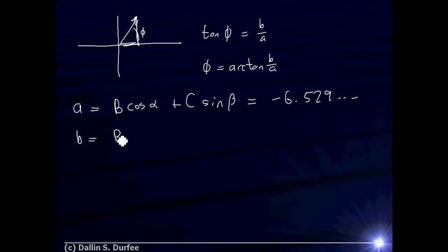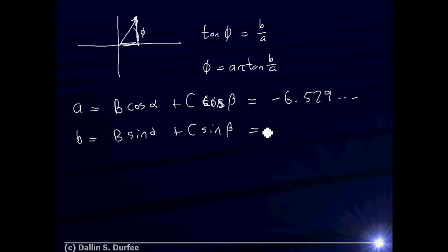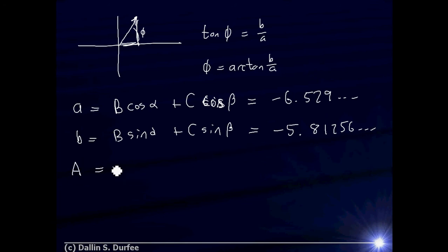The imaginary part is B*sine(alpha) plus C*sine(beta) — cosine gives you the real part of a complex exponential and sine gives you the imaginary part. Plugging those in, the imaginary part is negative 5.81256... Then the amplitude A is just the square root of a-squared plus b-squared, which gives 8.74189...